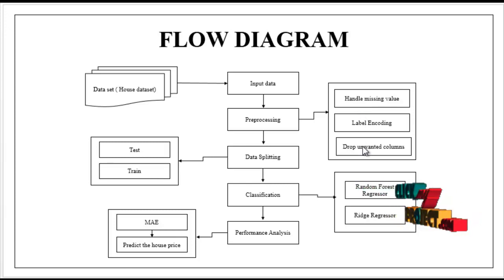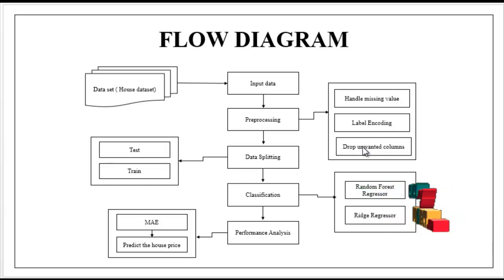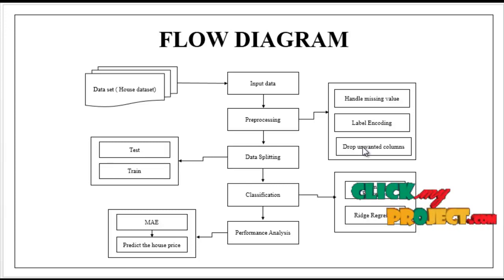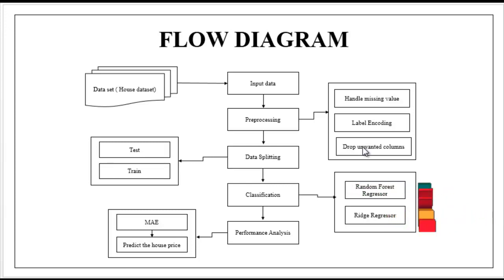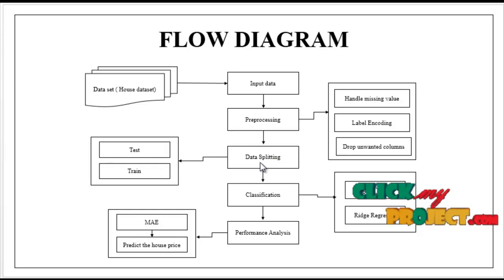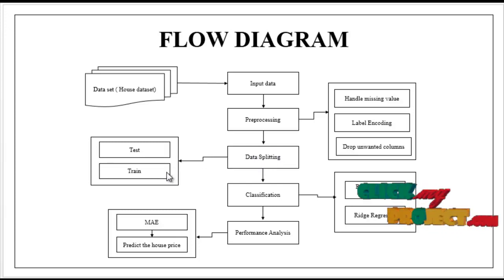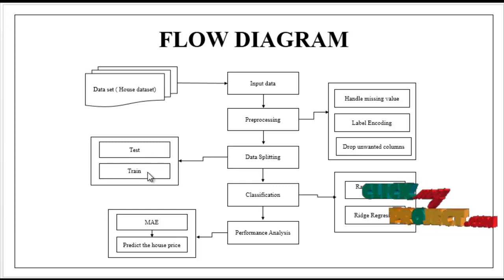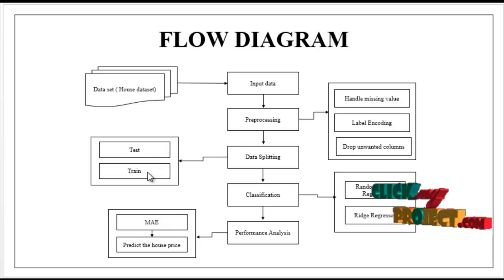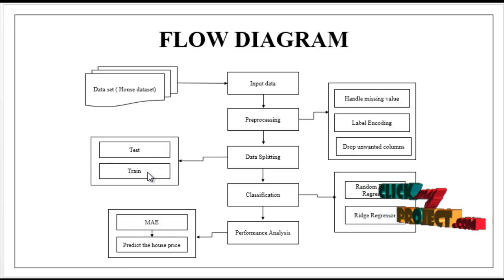Then we have to drop the unwanted columns. If any column in our dataset is unnecessary to our process, we have to drop those unnecessary columns in preprocessing. After that we have implemented the data splitting model. In this model we have to split the whole dataset into test and train. Test is used for prediction and train is used for evaluation. Based on a ratio we split our dataset — for example, 80 to 20 means 80% of data is present in train and 20% of data is present in test. Most of the data is present in the training part only.